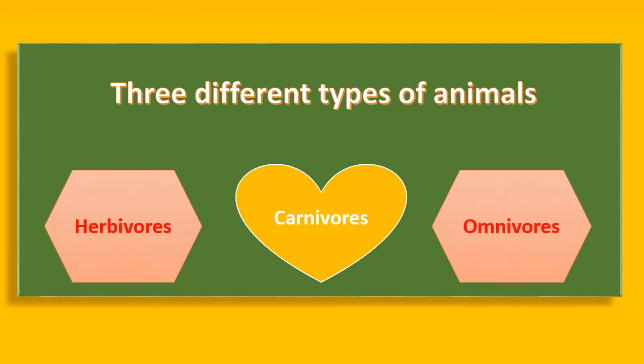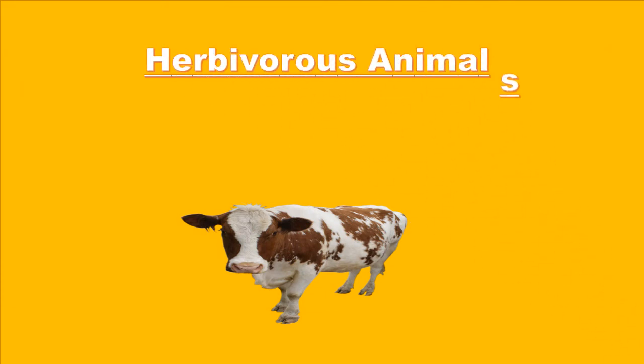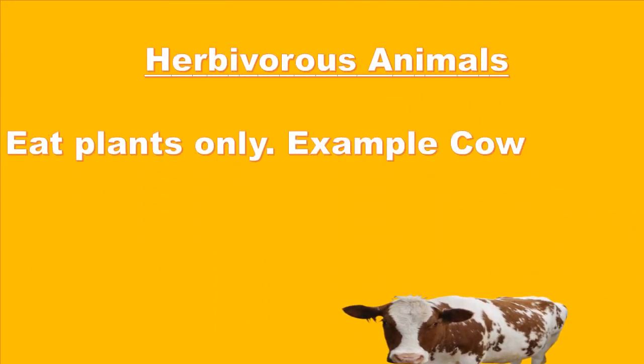Now we're going to look at the three different types of feeders that exist. There are three different types: herbivores, carnivores, and omnivores. First, we have herbivores. Herbivores are plant eaters only — they only consume plants. For example, we have the cow, and we know that the cow consumes grass.